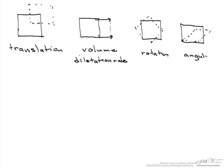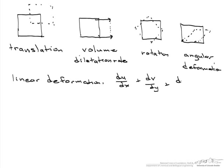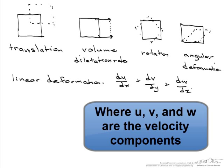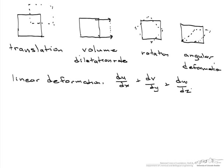So how do we analyze these processes? Well, the first one that I'll talk about is linear deformation. We can calculate that as the change in u with respect to x plus the change in v with respect to y plus the change in w with respect to z. That makes sense because the volume is changing in the same direction as the velocity.